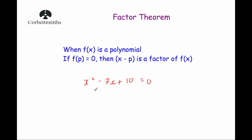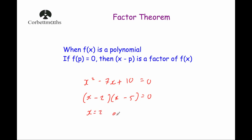If I wanted to solve this quadratic equation, I would factorise it. So put the brackets down: x and x, the two numbers multiply together to be 10 and add together to be minus 7. So it's going to be minus 2 and minus 5, because minus 2 times minus 5 is 10 and they add to be minus 7. So x equals 2 or x equals 5 are our two solutions.